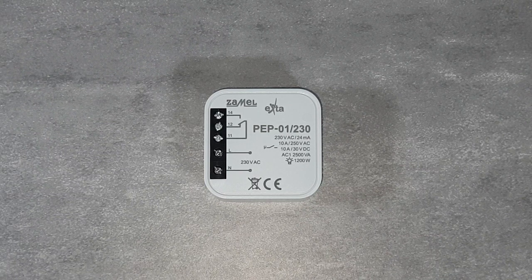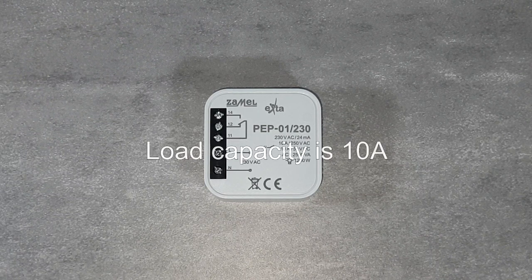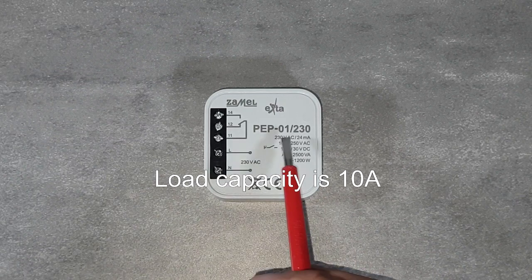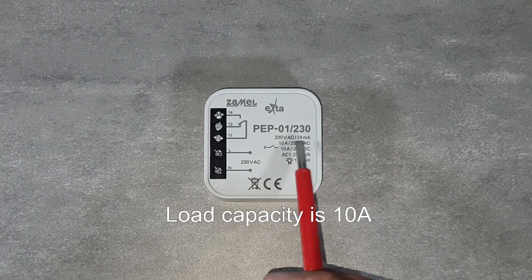The built-in relay has the ability to switch maximum current of 10A, both for 230V AC version as well as DC version of 30V.